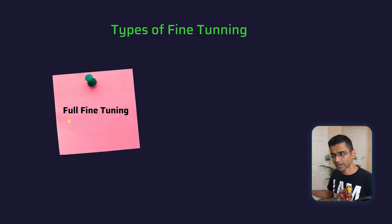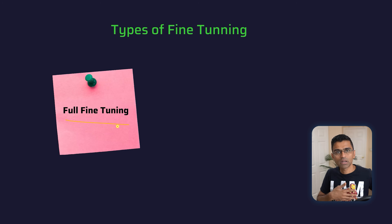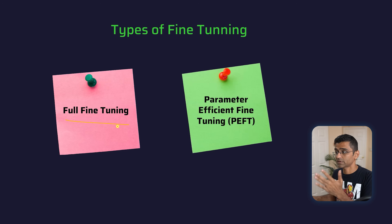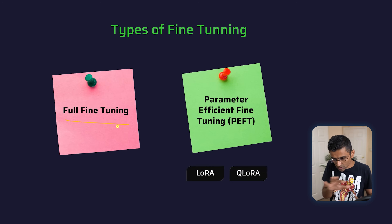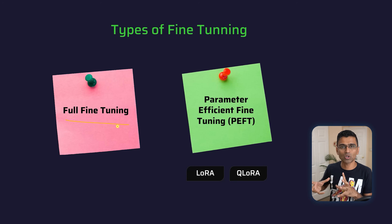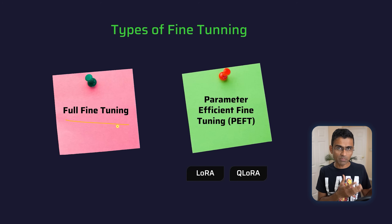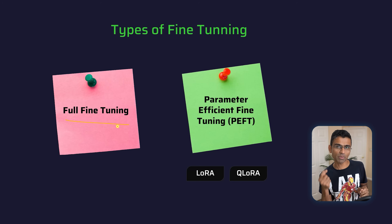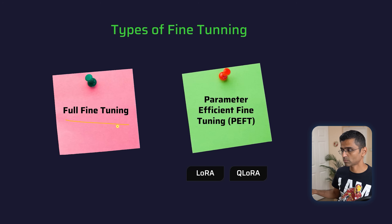There are two types of fine-tuning. First is full fine-tuning, where you retrain the entire network — updating all 70 billion or 100 billion parameters — which is costly. Second is Parameter Efficient Fine-Tuning (PEFT), with two popular methods: LoRA and QLoRA. In PEFT you don't update all the layers; you keep existing layers frozen and add some new layers on top, similar to transfer learning in deep learning.